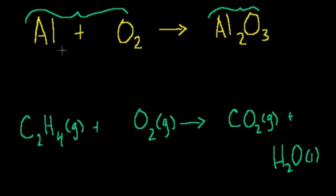So I have a different number of aluminums on both sides of this equation. On this side I have one aluminum; on this side I have two aluminums. And then I have a different number of oxygens — on this side I have two oxygens, and on that side I have three oxygens. So balancing equations is all about fixing that problem.